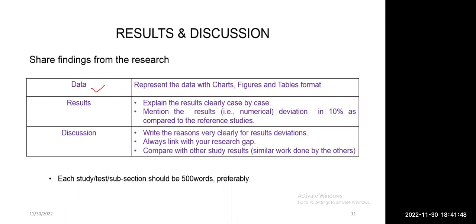We need to mention the data in the research article. In what format do we need to mention the data? It is always advised to mention your data with the help of charts, figures, and table format. This will help the reviewer and readers to easily understand. Whatever the experimental data or analytical data we have, that must be converted into the format of charts, graphs, and tables so that they will easily understand.